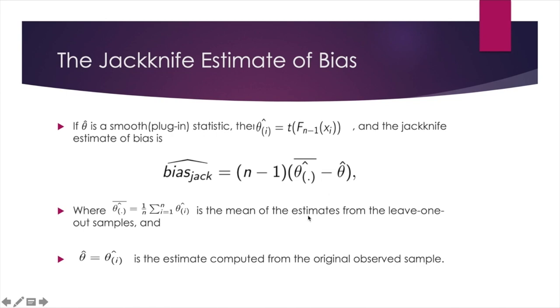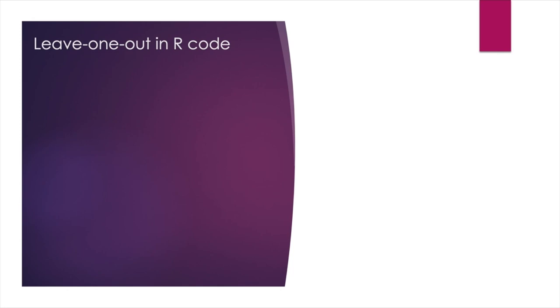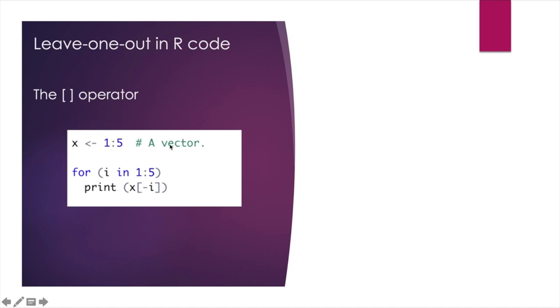So let's take a look at an example in R. First of all, there is a simple way in R that we can leave out the i's element of a vector. Here is the code. For example, we have a vector which is 1, 2, 3, 4, 5. Inside this for loop, we use this square bracket to leave out the i's element. So after we execute this line, the output would be this. Notice that the for loop prints out five lines. For the first line, the first element is gone. For the second line, the second element is gone, and so on. So this is how we do leave one out in R.